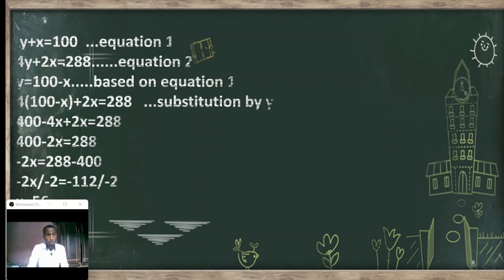And 4y plus 2x equals 288. I say 4y because sheep has four legs and hen has two legs, so their legs is 288. This is equation 2.